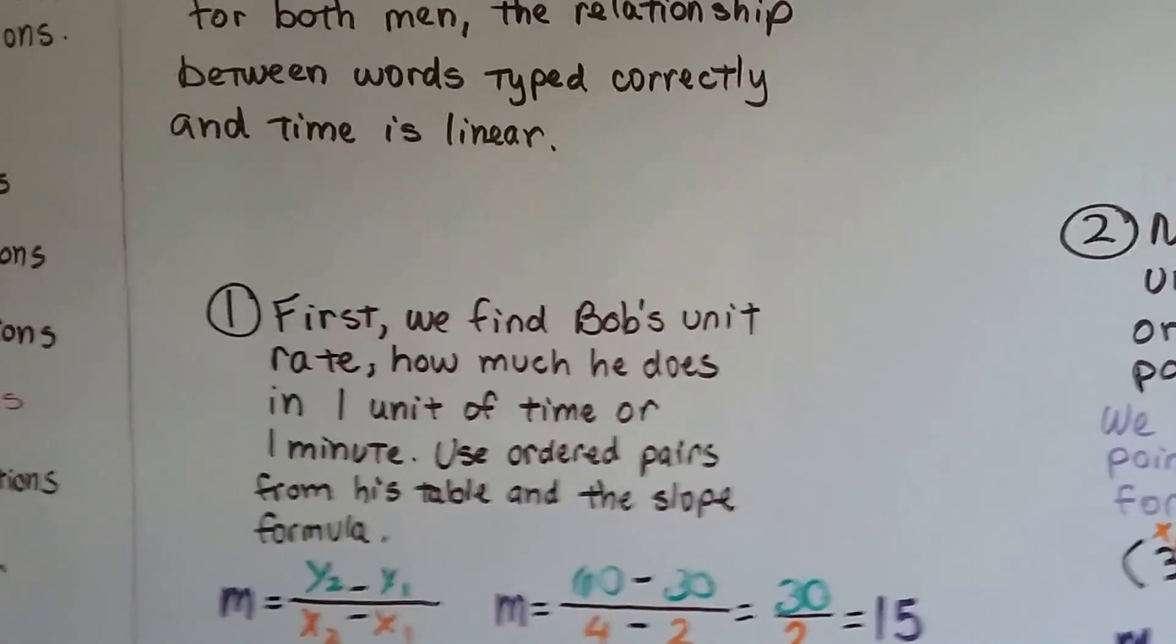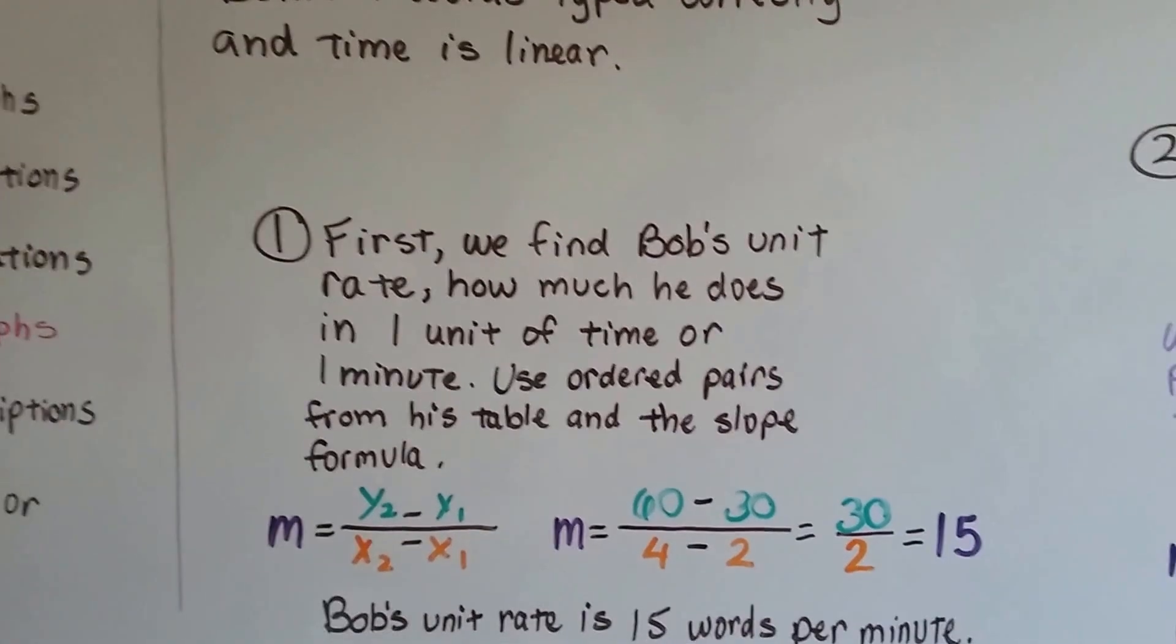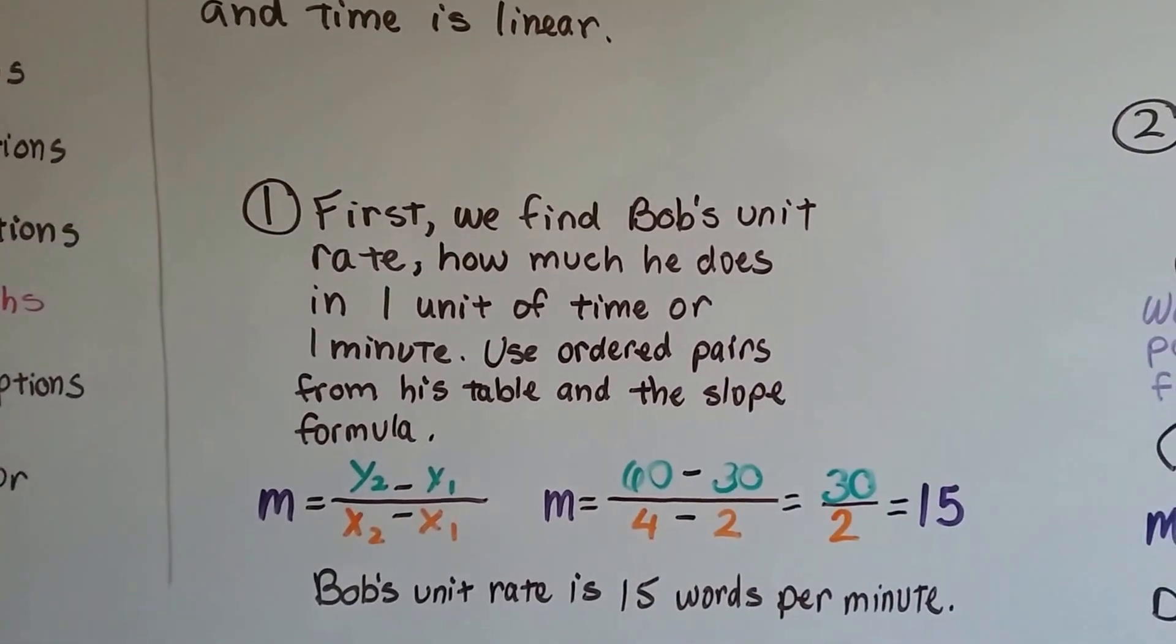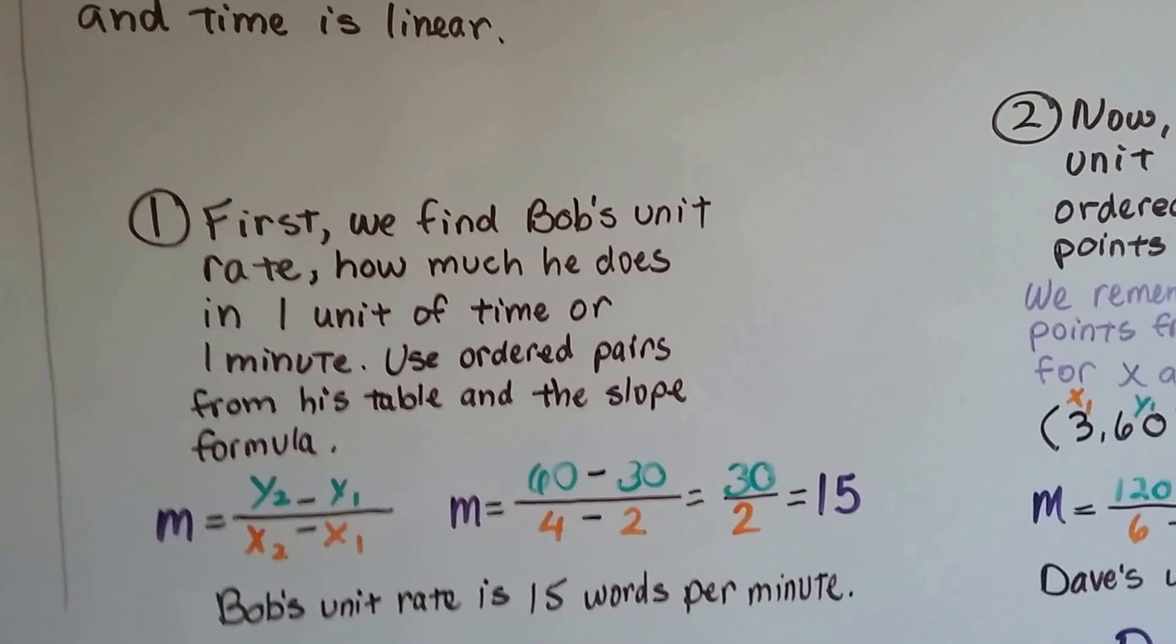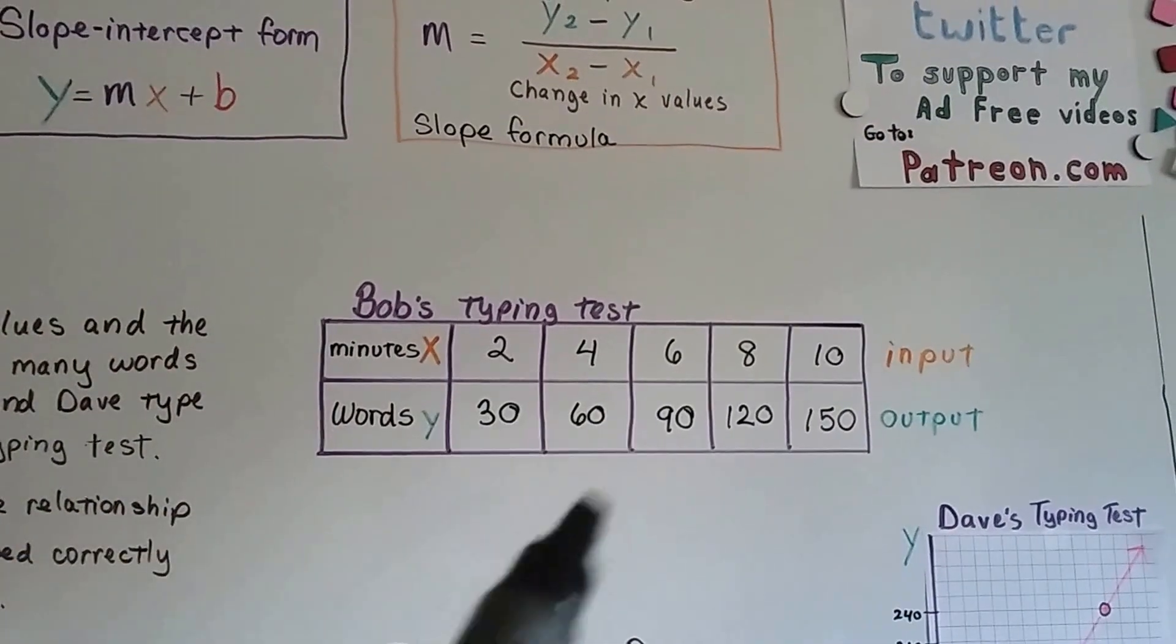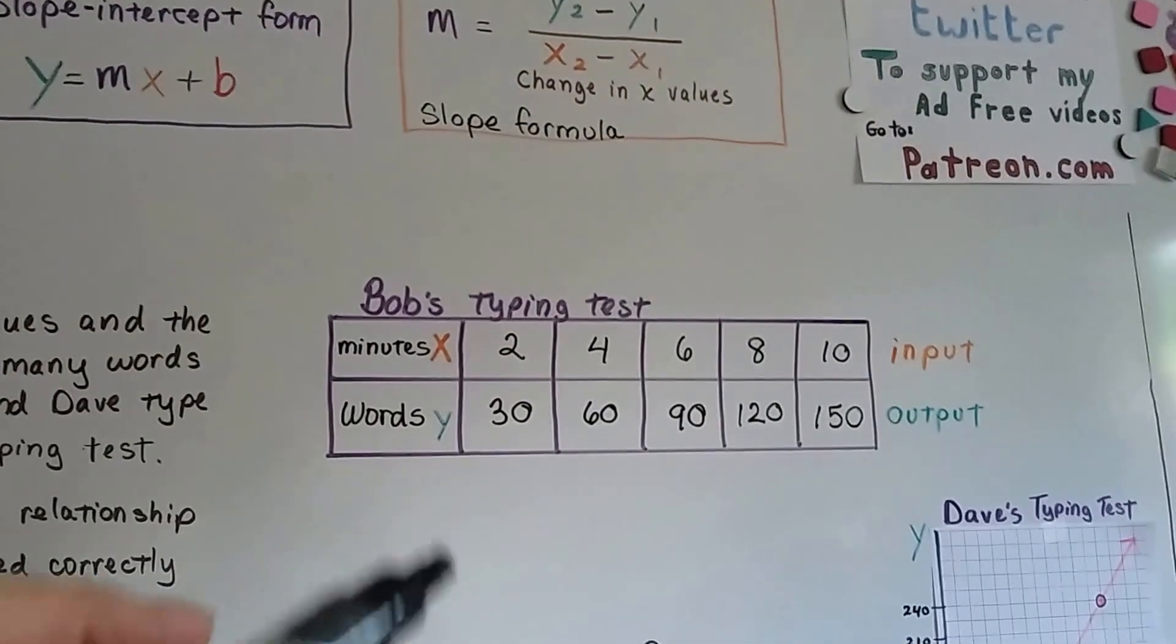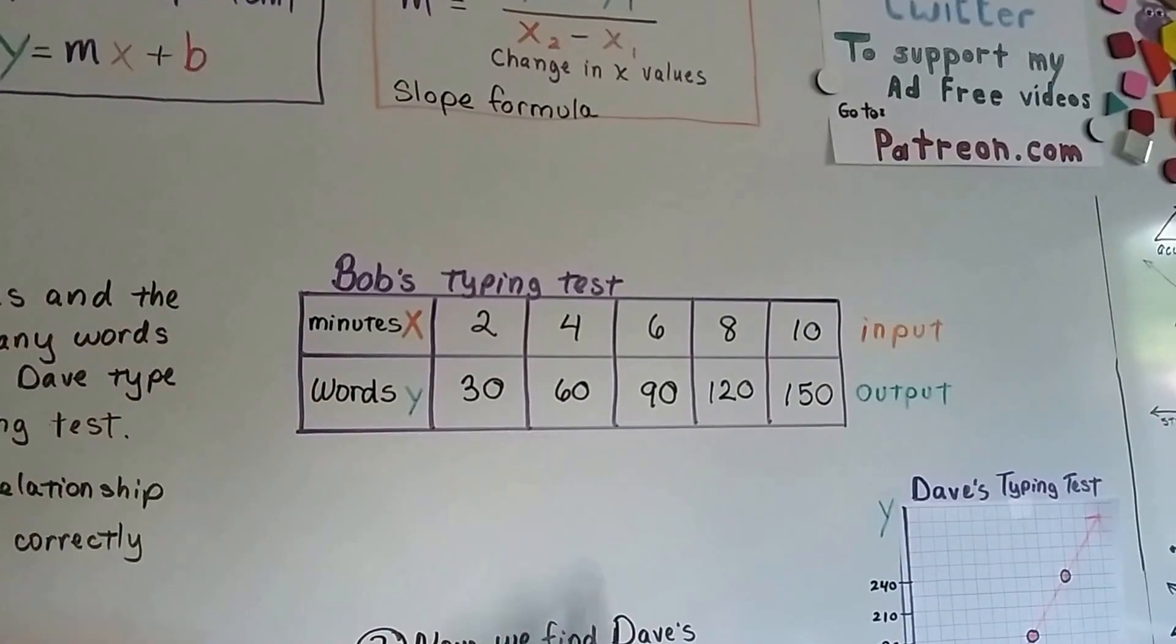So the first thing we're going to do is find Bob's unit rate. How much does he do in one unit of time, or one minute? We use ordered pairs from his table and the slope formula. So we pulled some ordered pairs from this table and we use that slope formula. So we chose 30 and 2, and 60 and 4.